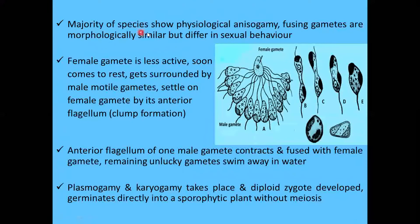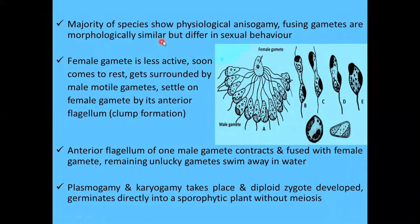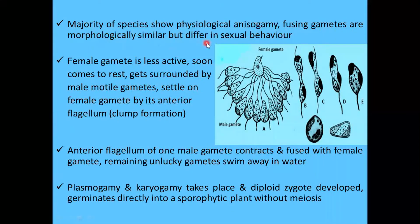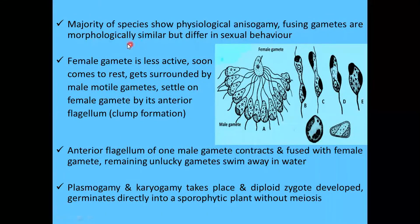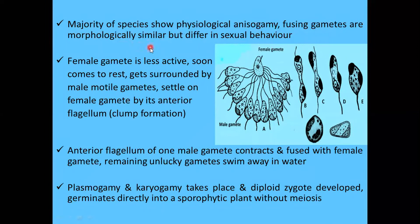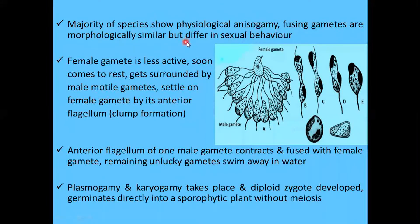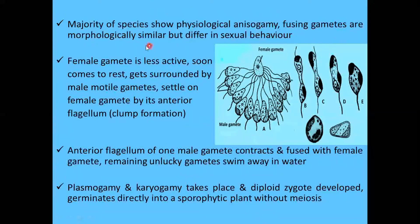The majority of brown algae species show physiological anisogamy, in which the fusing gametes are morphologically similar but differ in sexual behavior. The morphology of the two gametes is similar, but they behave differently, as we will now discuss.